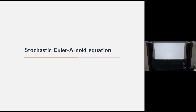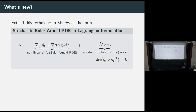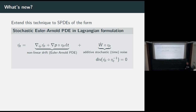This was the overview of the deterministic case, none of which is due to us. Now what we want to do is study a stochastic version. In the Lagrangian formulation, you have a nonlinear drift — the Euler equation drift — and then we have an additive stochastic time noise. This is only noise in time; we can't have noise in space because we want to preserve that we can still do this trick and end up with something well-defined in the group of diffeomorphisms. So we have something which is regular in space.